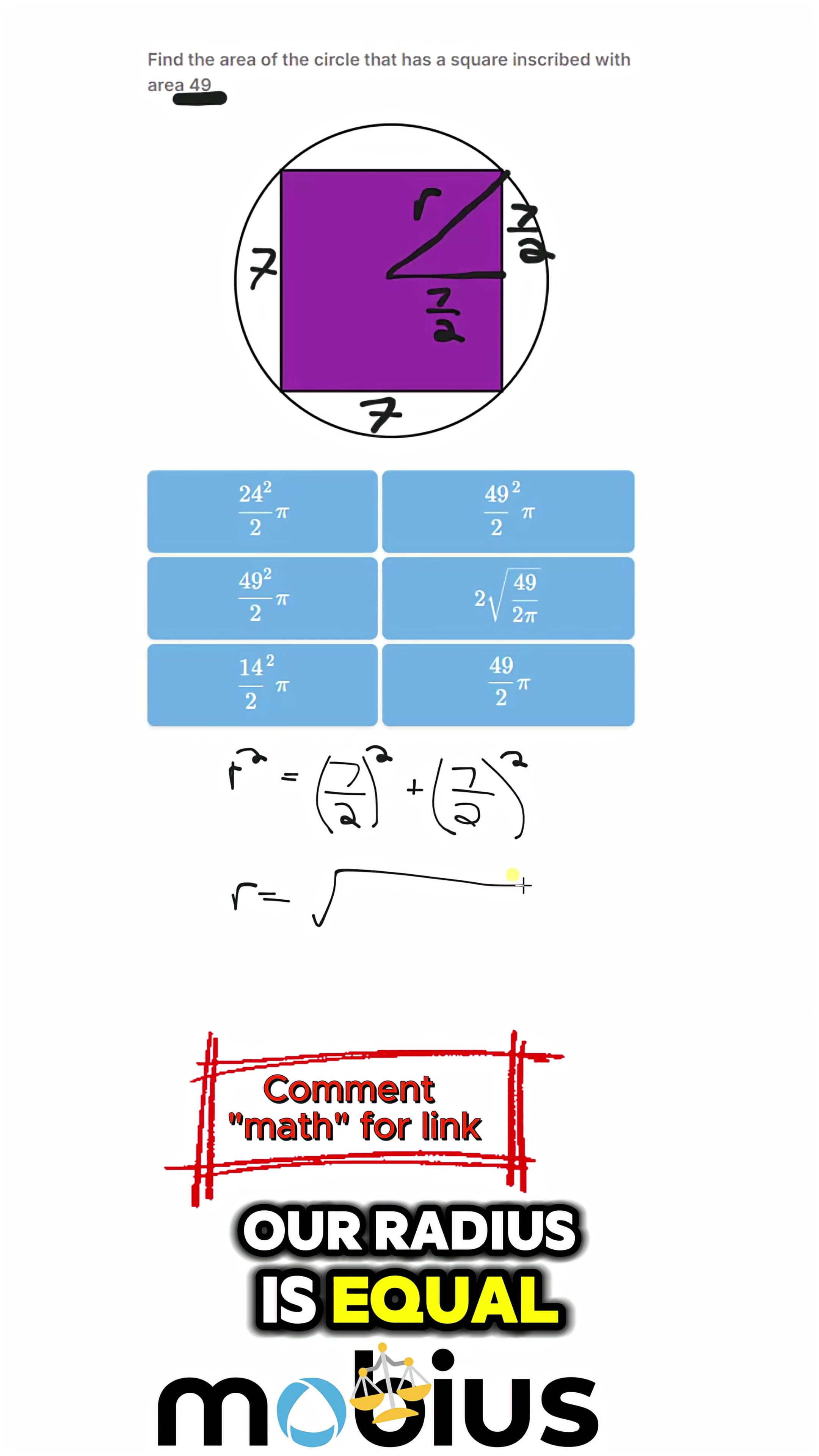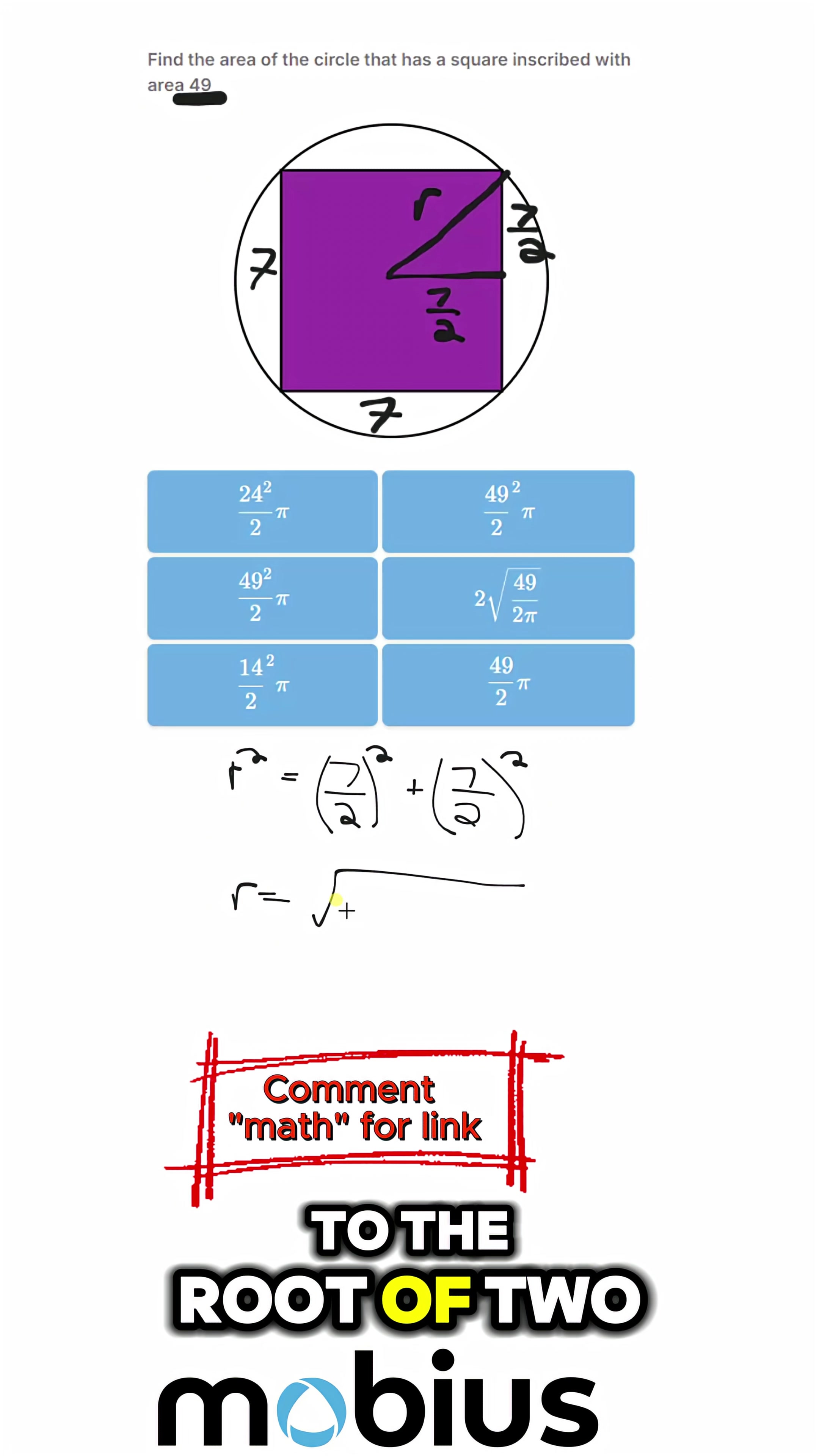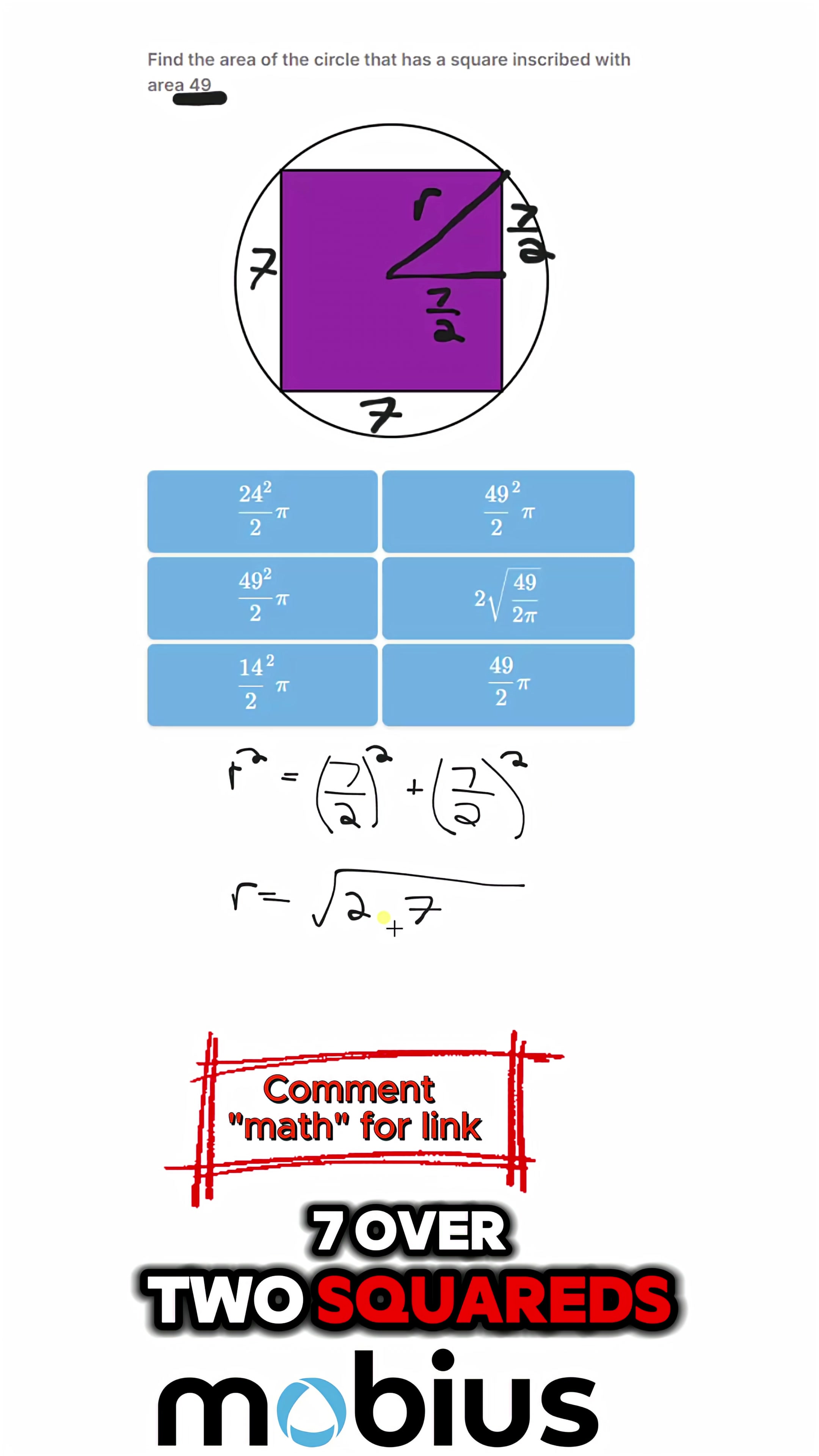our radius equals the root of 2 times 7 over 2 squared.